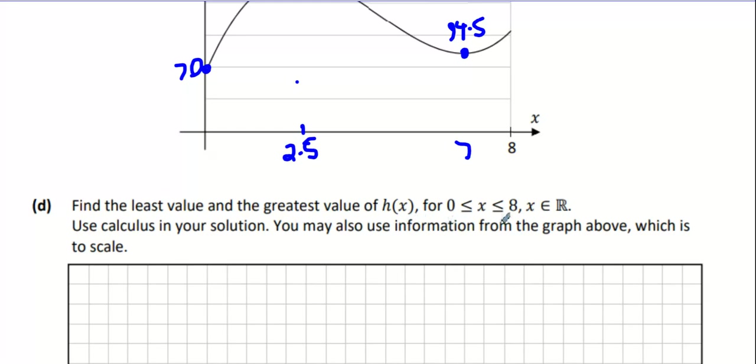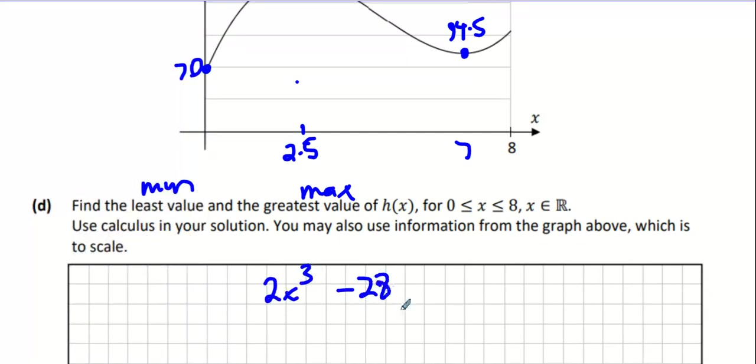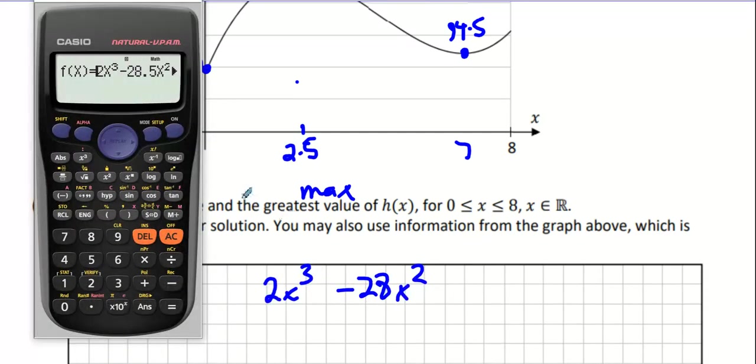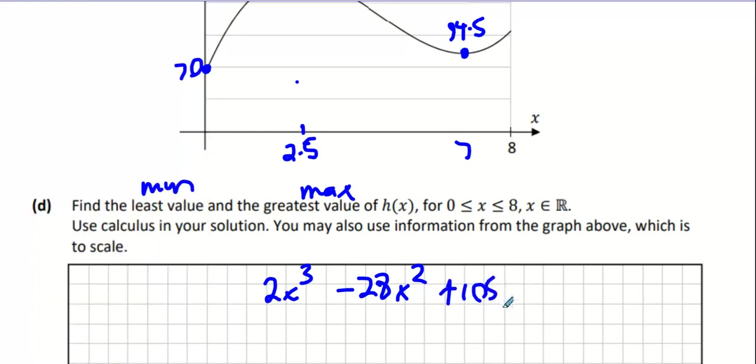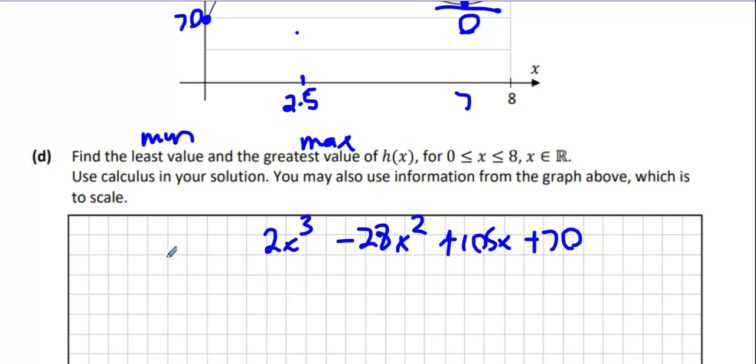Find the least value and greatest value of h of x. Looking for your min and your max of your formula. Remember what we said the formula was earlier: 2x cubed minus 28.5x squared plus 105x plus 70. Your slope or your rate of increase at your maximum and min is 0. So your slope equals 0, which means we're going to do the first derivative equals 0. And we know the first derivative, we did it already today. It's 6x squared minus 57x plus 105.